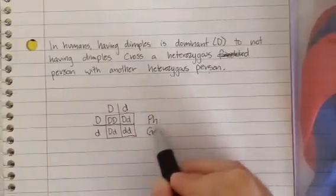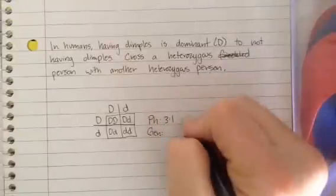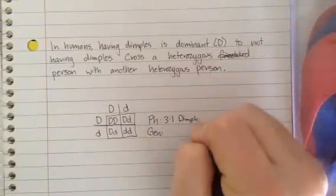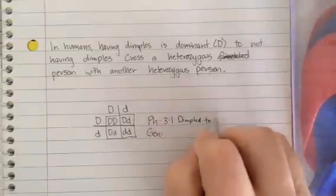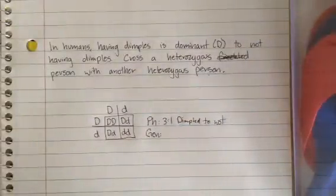So what we would say for our phenotype, again, what do they look like? Three to one, and we'd say dimpled to not, or dimples to no dimples, however you would like to phrase that.